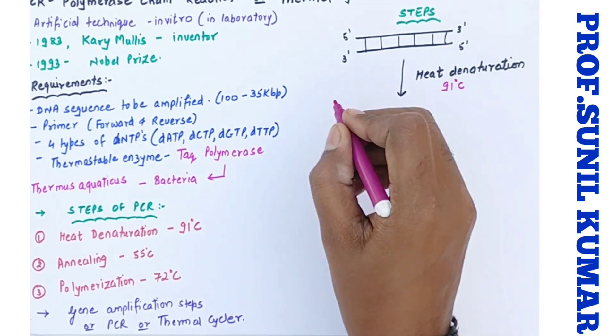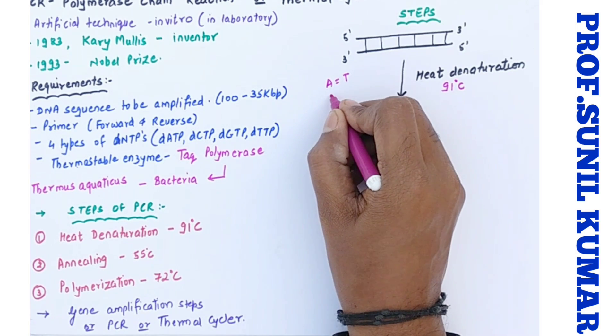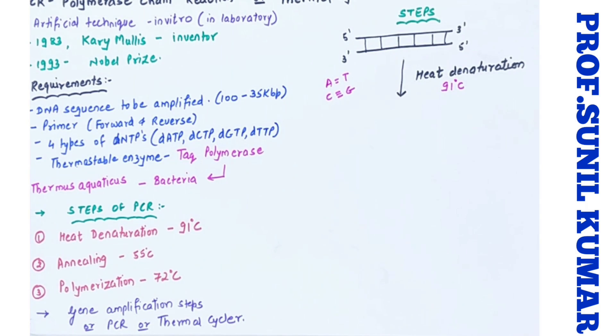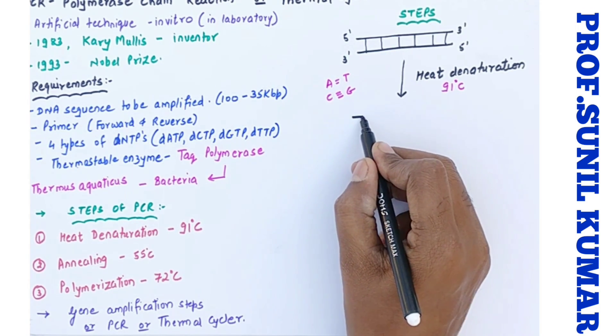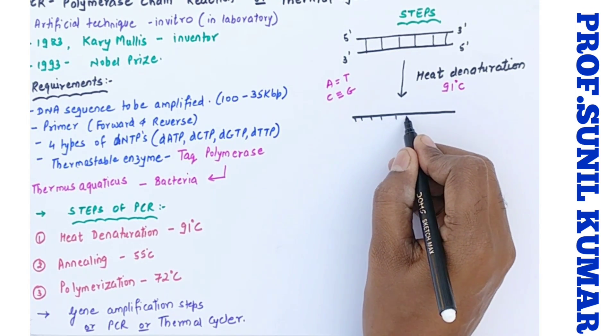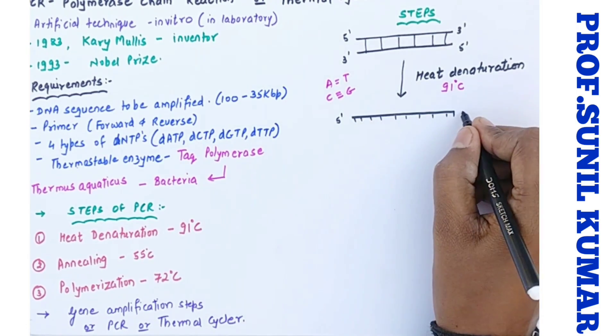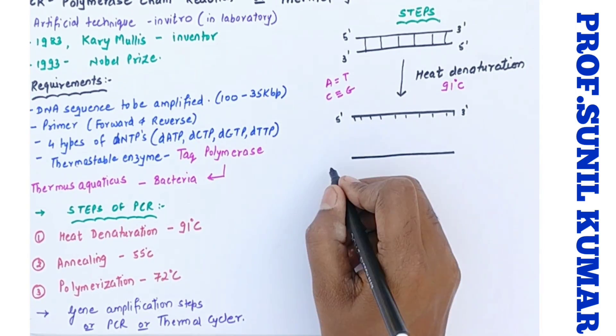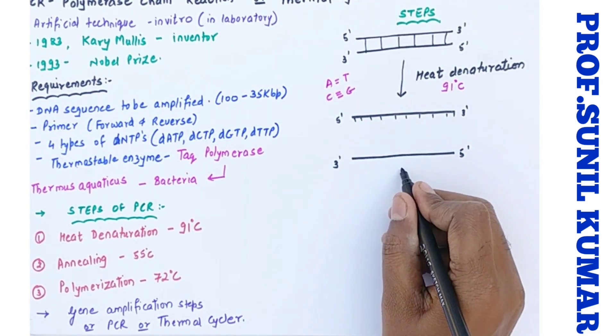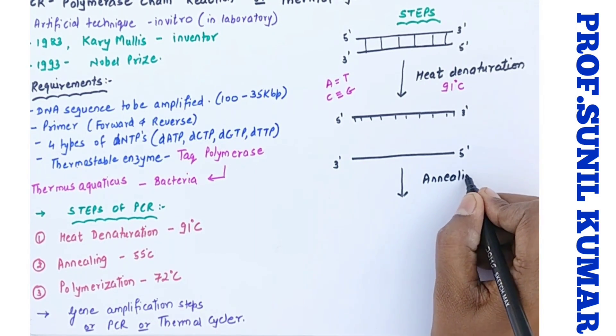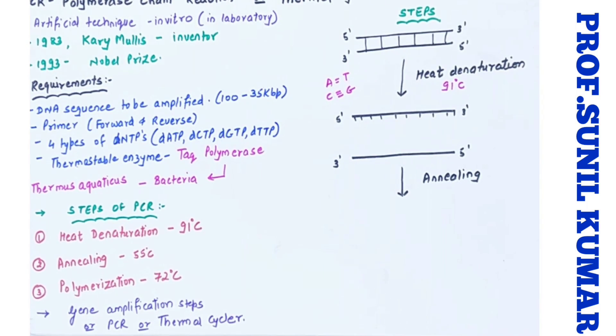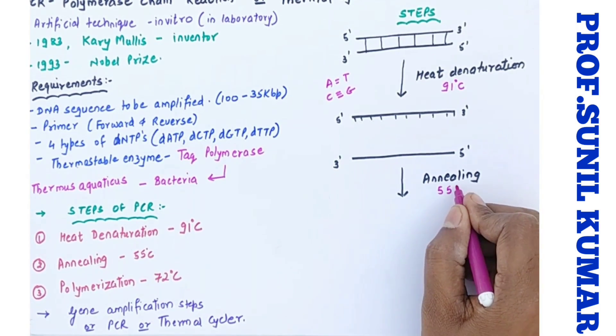Around 91 degrees Celsius. Now we need to understand here that A and T are held by double hydrogen bond and C and G they are held by triple hydrogen bond. It means energy required to break A and T will be less and the energy required to break C and G bond will be more with respect to number of hydrogen bonds. And what happens, the DNA gets denatured. We get two single stranded DNA.